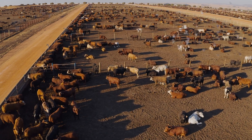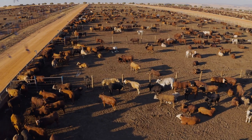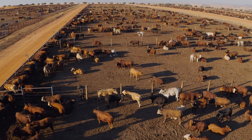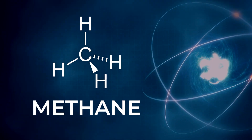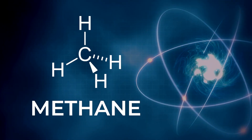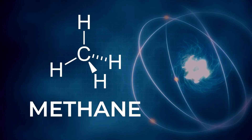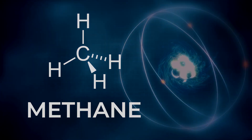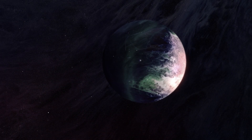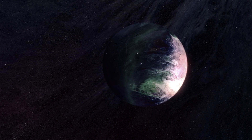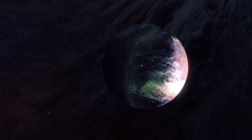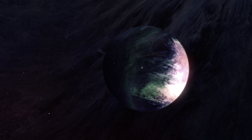On Earth, for example, some of the methane in our atmosphere comes from animals. Methane is a biosignature, because the only way it can stick around in an atmosphere is if it's constantly being produced by something. If we were to find methane in an exoplanet's atmosphere, we could have our first hint that there might be life on that planet.